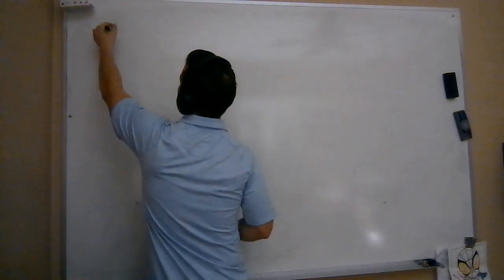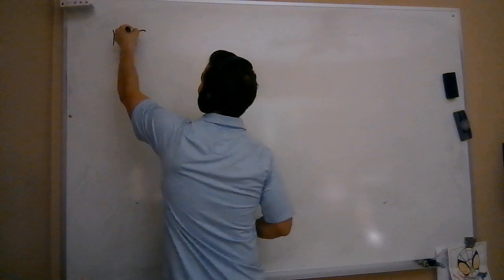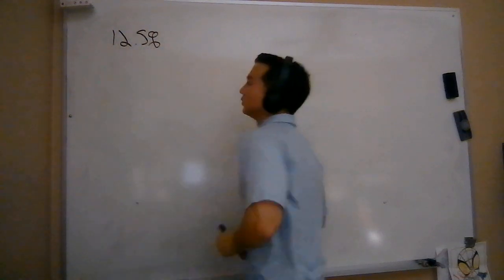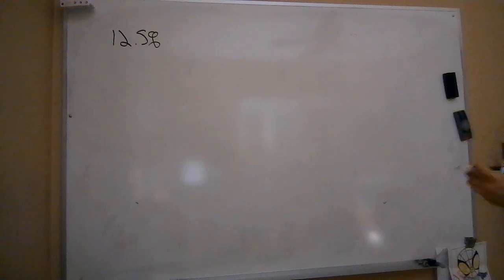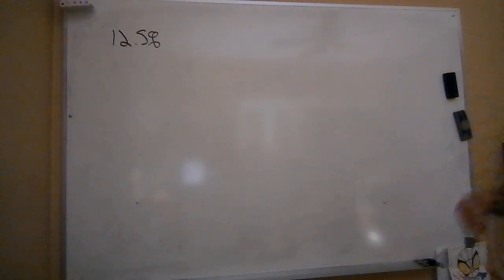We are going to be using a 12.5% solution of sodium hypochlorite. Remember that means 12.5% of whatever weight I add is actually going to be chlorine.